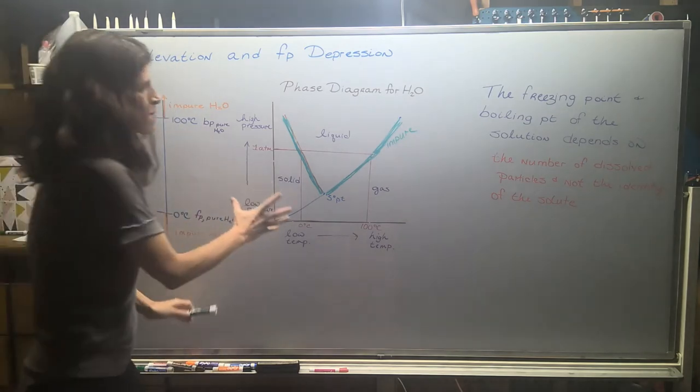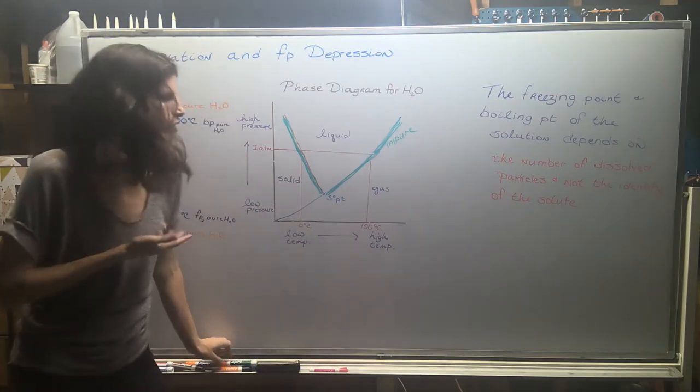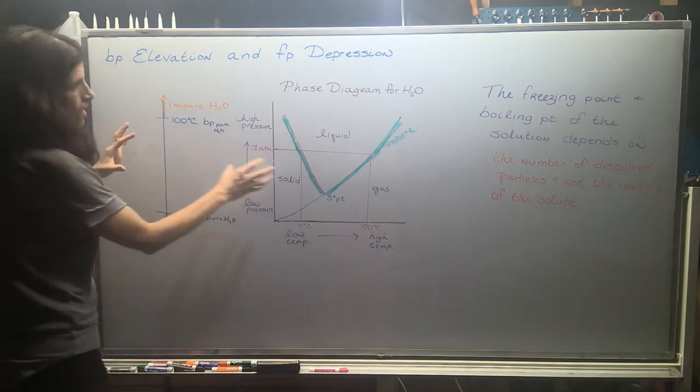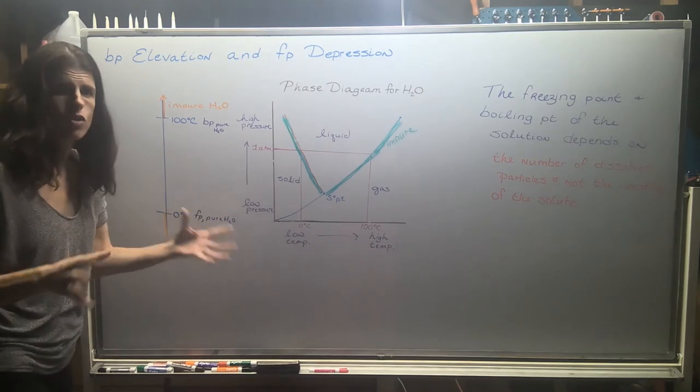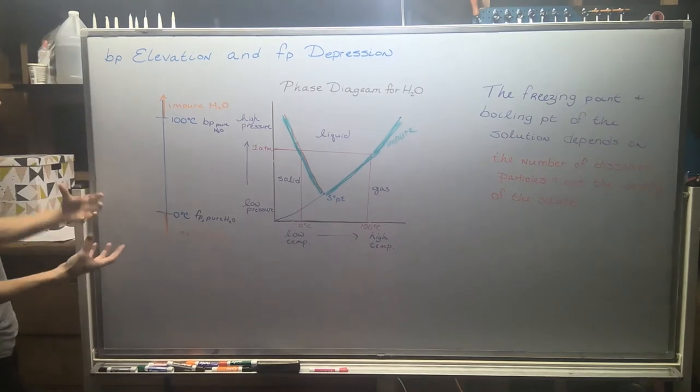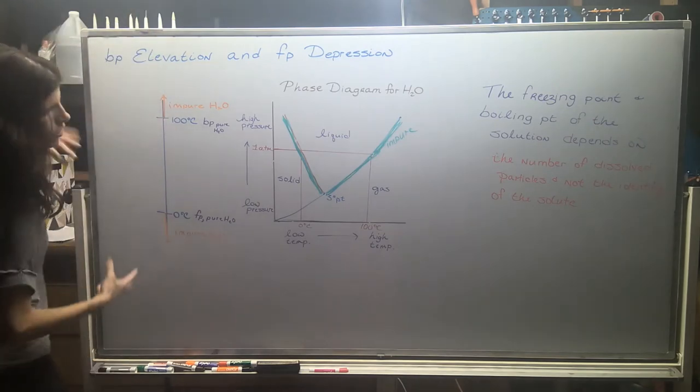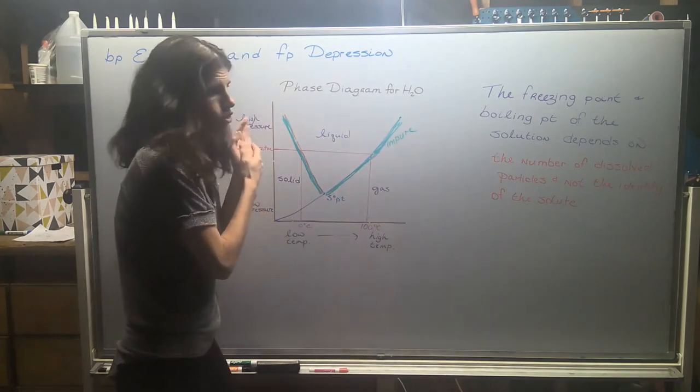So super cool, super powerful tool tells us a lot about the behavior of a substance. But again, the big takeaway here with both this and this is that impure solutions, and it could be water, but it could be any other solution. Impure solutions experience an expansion of the freezing point and boiling point ranges.